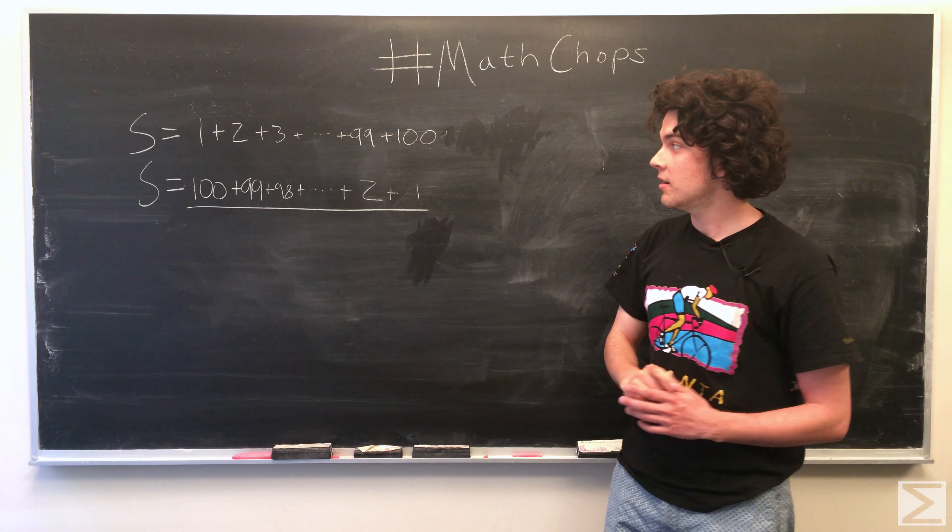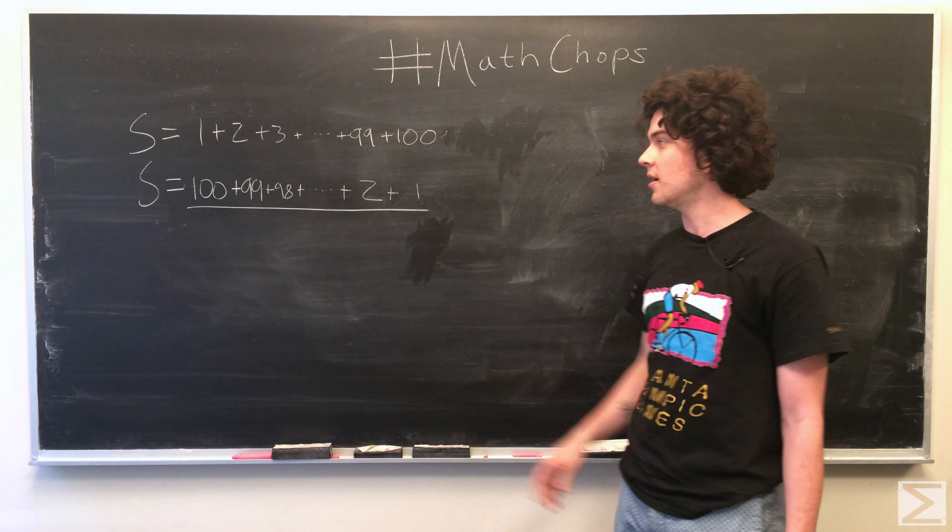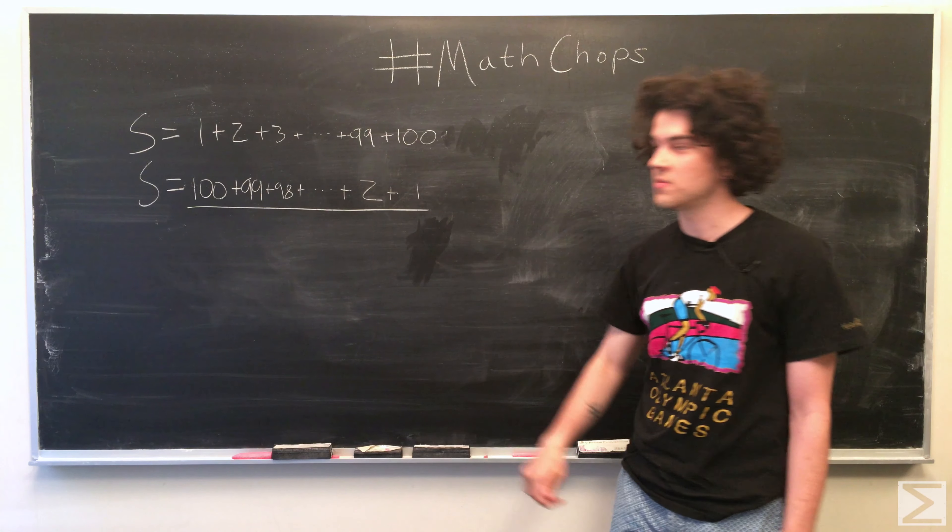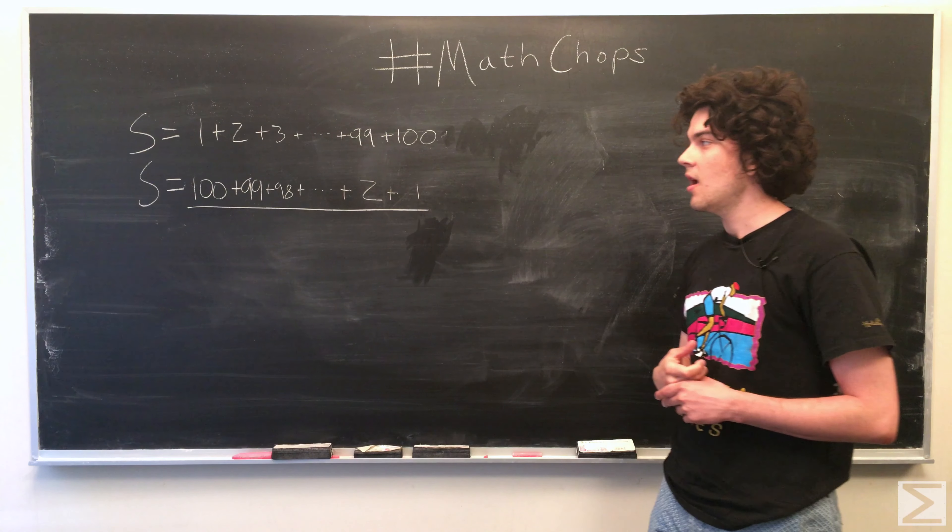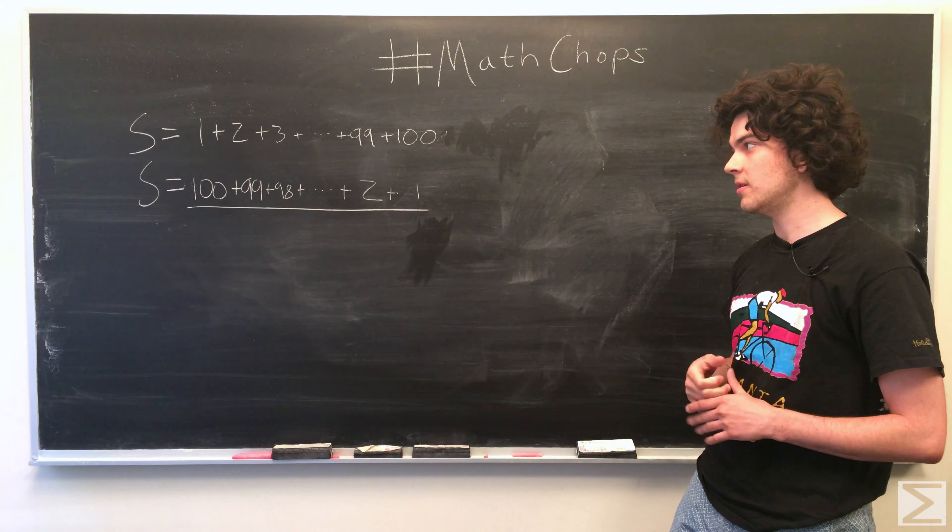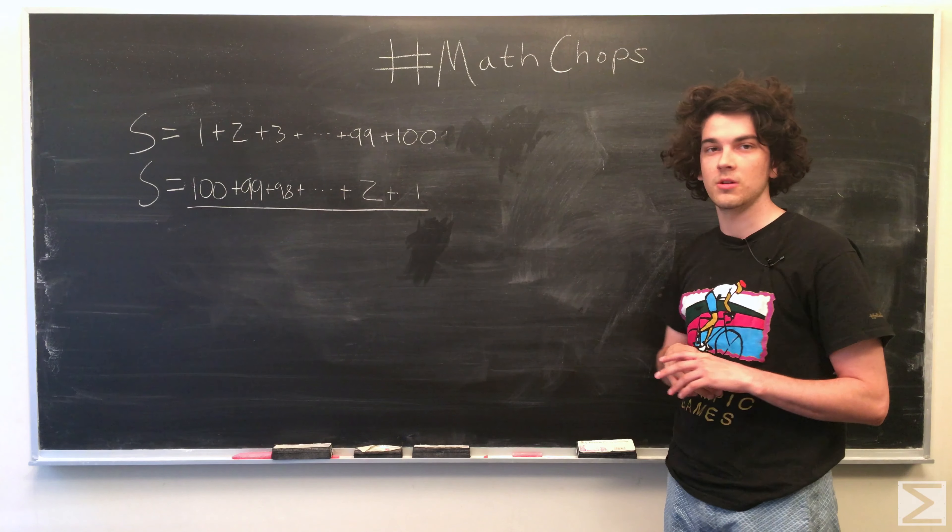The trick here is we just flip the sum. We have our sum S, which is what we're trying to compute. We flip it, and we still have the same thing since it doesn't matter which order you do addition in.